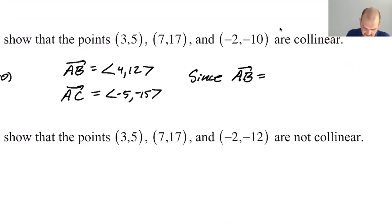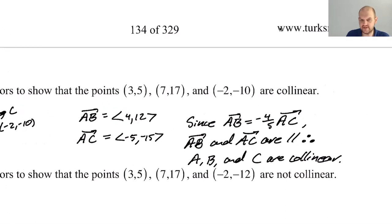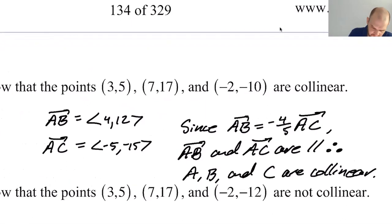So I'm going to say it's negative 4 fifths of AC. AB and AC are parallel. Therefore, A, B, and C are collinear. So if I had 4 points, this wouldn't work, necessarily, right? So 4 points, what could have happened is you could have this and then this, right? You can actually get 2 parallel vectors that aren't from the same line.